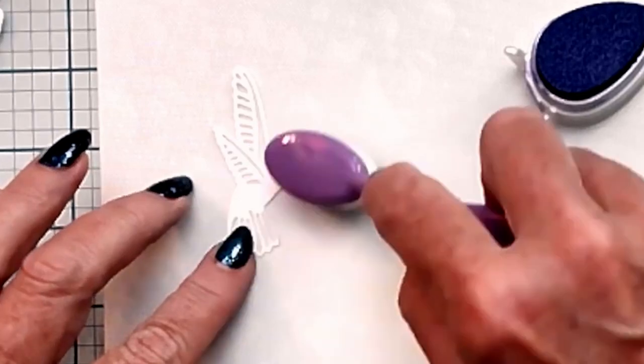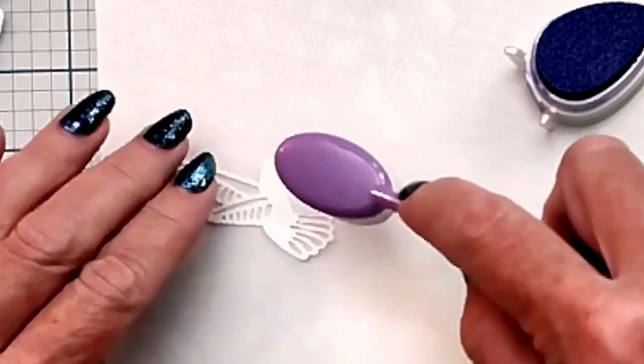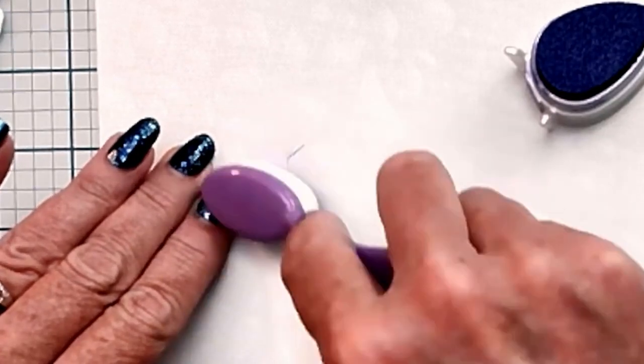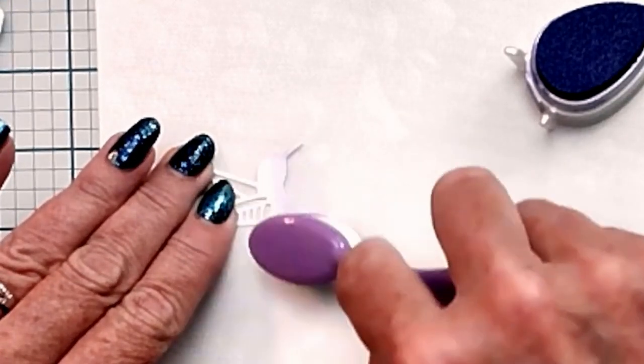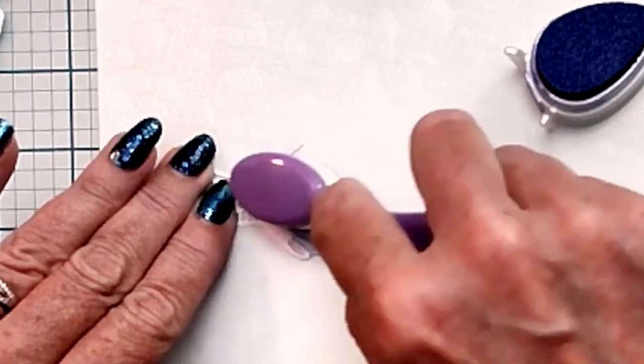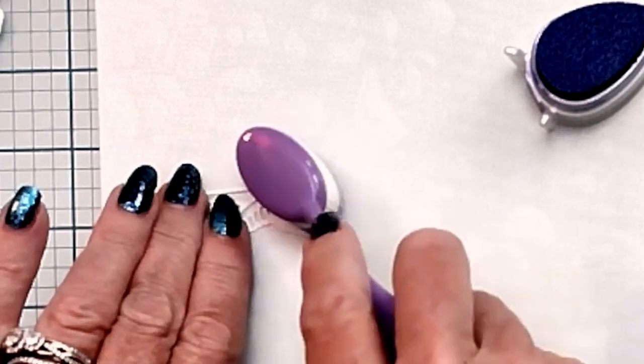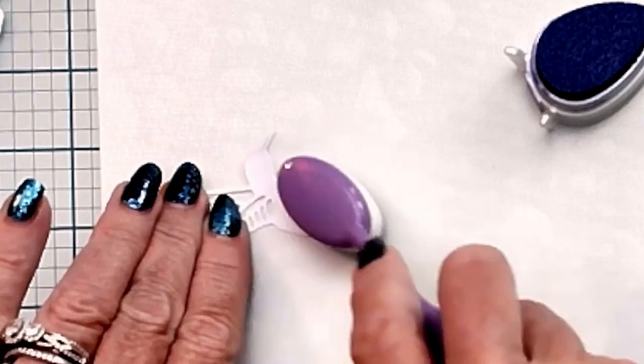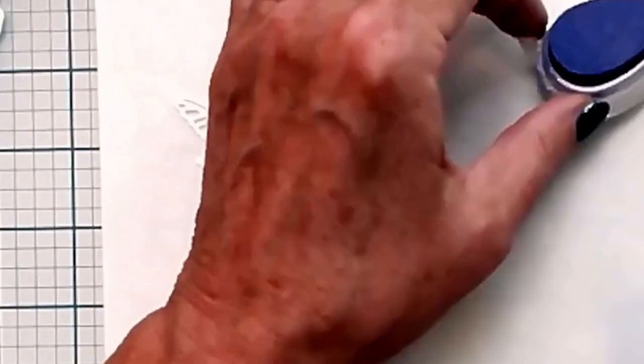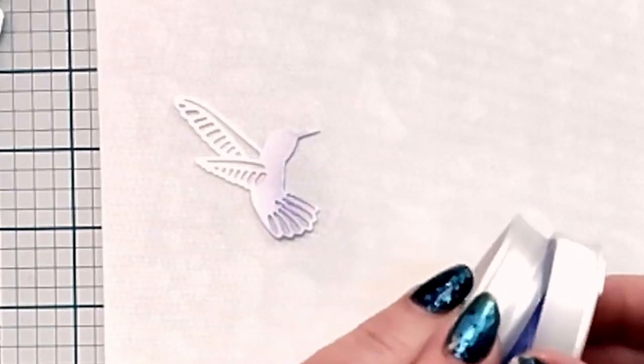It just looks like you've put some kind of embossing powder on it. Some of the Brilliance inks, like this one, do have the additive that creates that shimmer. In our experience, these inks do take a bit longer to dry than the non-iridescent ones. So be sure that you use an even lighter touch when you ink up your brush.